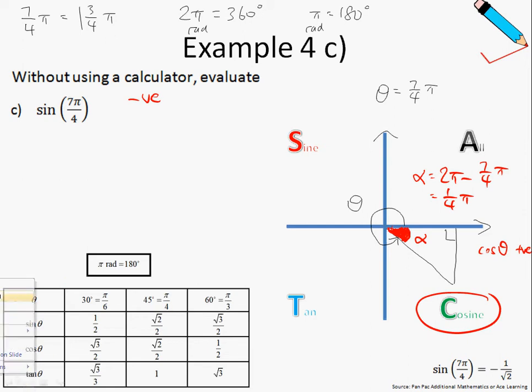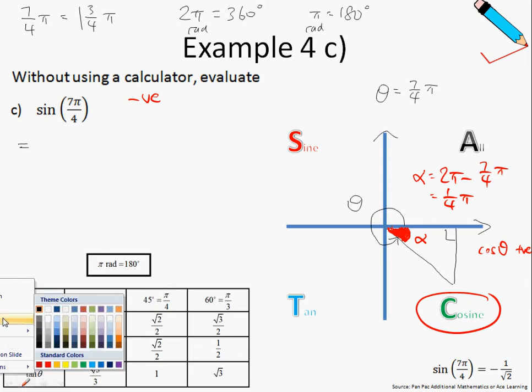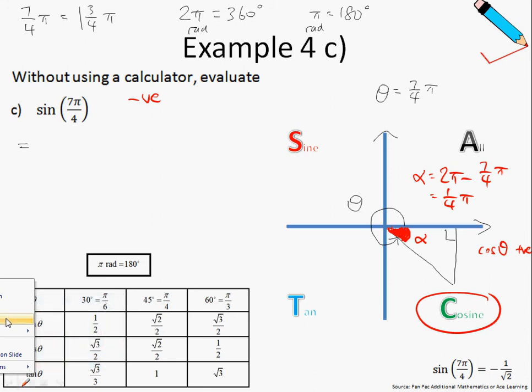So with all this information, how do we carry on to solve the question? We will make use of the table you see on the bottom left-hand corner of the screen. Since 45 degrees is equal to pi over 4, let me just highlight this. We are looking for sine of 45 degrees, which is root 2 over 2.